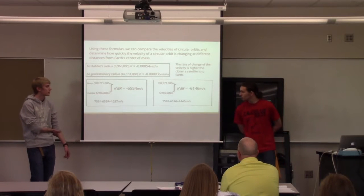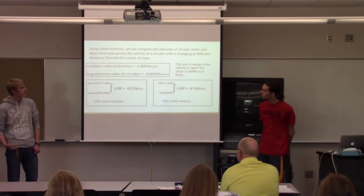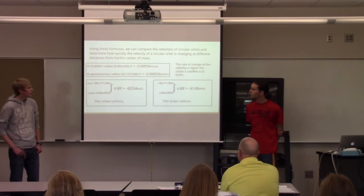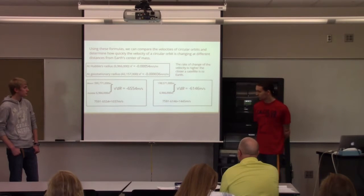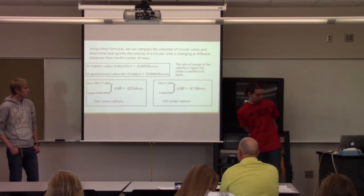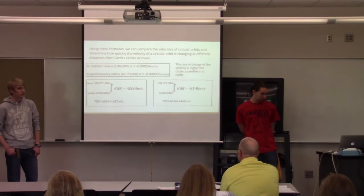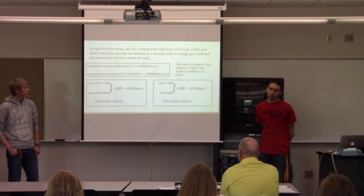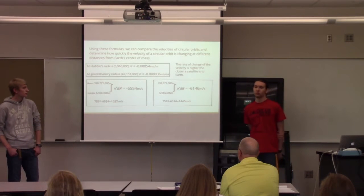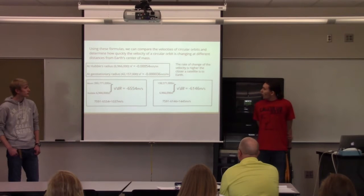I also looked at the difference between Hubble and then half of the Moon's radius. It came out to be 1,455 meters per second, which isn't very much different from at the Moon. So that's definitely showing that the closer you are to the Earth, the faster the speed changes.